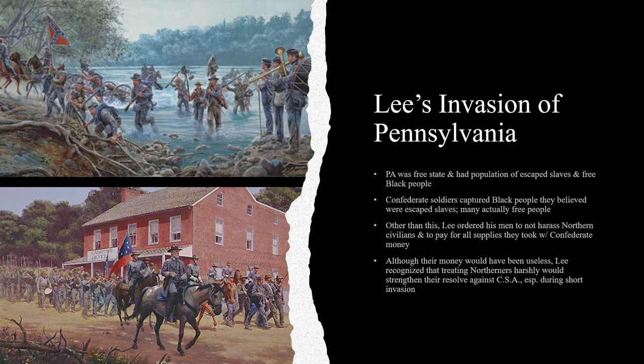Lee's Army of Northern Virginia invaded northward through Maryland and Pennsylvania. Lee recognized that forcing the Union to fight on its own ground would be demoralizing to the people of the North, and it could take pressure off the beleaguered Virginian countryside, which had been decimated by both armies in their struggle for food, fuel, and beasts of burden. Lee urged his men not to anger the Pennsylvanians with whom they came into contact, fearing that depredations against civilians would strengthen Northern resolve. He ordered them to compensate civilians with Confederate money, though Northerners would not be able to use this currency. Unfortunately, the Confederates also captured African Americans living in Pennsylvania whom they believed were escaped slaves, though many were free-born Northerners.